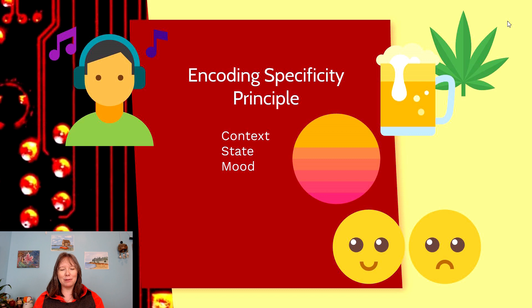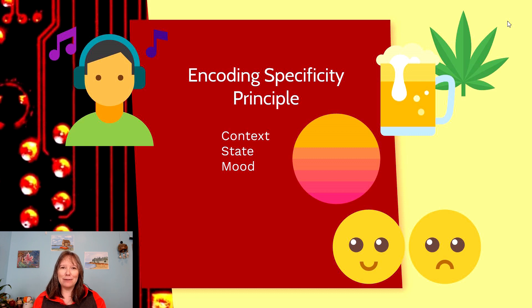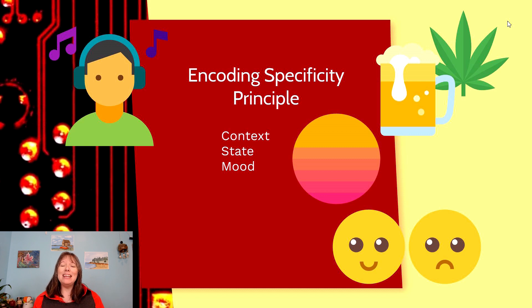This refers to the encoding specificity principle — the idea that if you were studying while listening to music and now you're in a test, remembering some of the songs you listened to while studying might actually help you come up with the answer. Similarly, if you practiced driving with the radio on versus off, you might do better or worse on your driving test depending on whether you replicate those conditions. We also tend to recall memories that match our mood — when we're happy we remember more optimistic memories, and when sad, more depressing ones. You might also remember things better at certain times of day based on your habits.